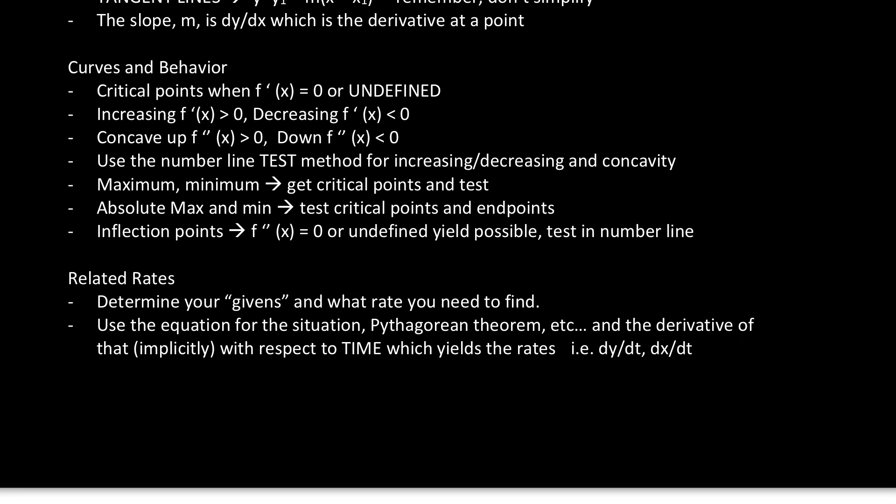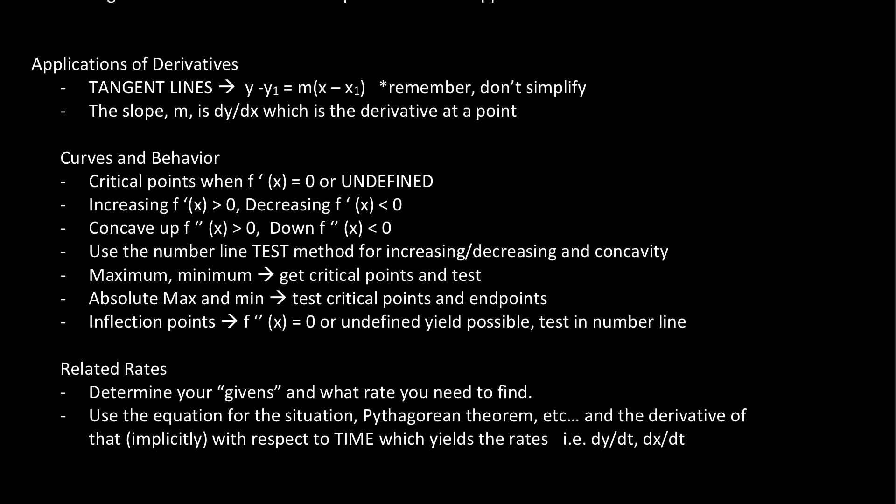Let's talk about some curves and behavior. You will know critical points. If you have a critical point, that's when f prime equals zero or undefined. If it's increasing, f'(x) is greater than zero. If it's decreasing, f'(x) is less than zero. Concave up, now you're taking the second derivative. f''(x) greater than zero, f''(x) less than zero. Make sure you use a number line method. That's the test method I recommend where you compare on a number line where you have f prime and f double prime. And you can also compare them to know when it's increasing and concave down or decreasing, concave up. To find maximums and minimums, you get the critical points and make sure you test them along with your endpoints if you're going for absolute maximum minimums. Inflection points, now it's when the second derivative equals zero or undefined yields the possible inflection points. But then we have to put them in a number line and test.